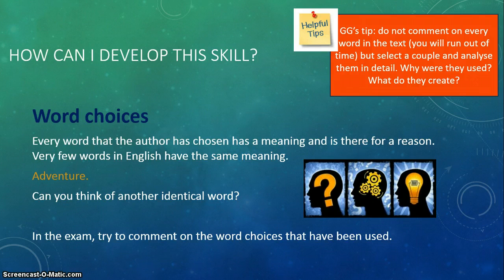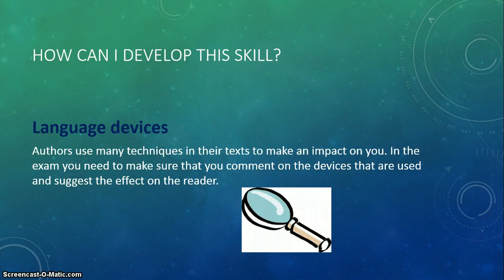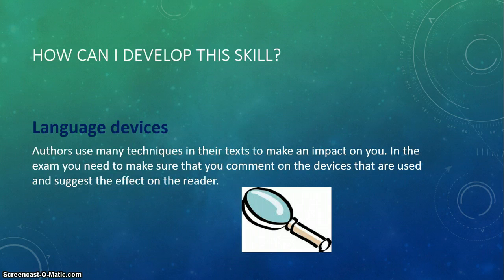Another way you can show your knowledge and look at implicit meaning is to look at language devices. Writers use language techniques to give their writing just a little bit more impact — they're there to make you feel something, perhaps the same emotion as the author, maybe shock you. In the exam, you need to make sure that you find devices and write about their effect on the reader. This should give you a higher mark. So you need to think about explicit and implicit meaning and look at word choices as well.